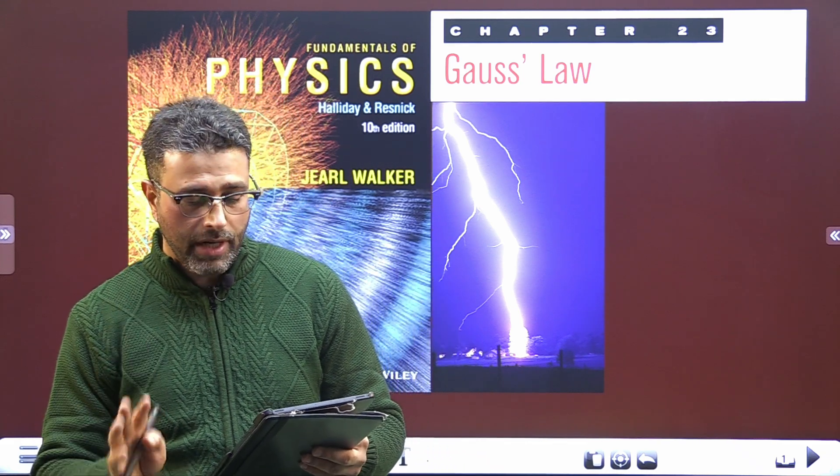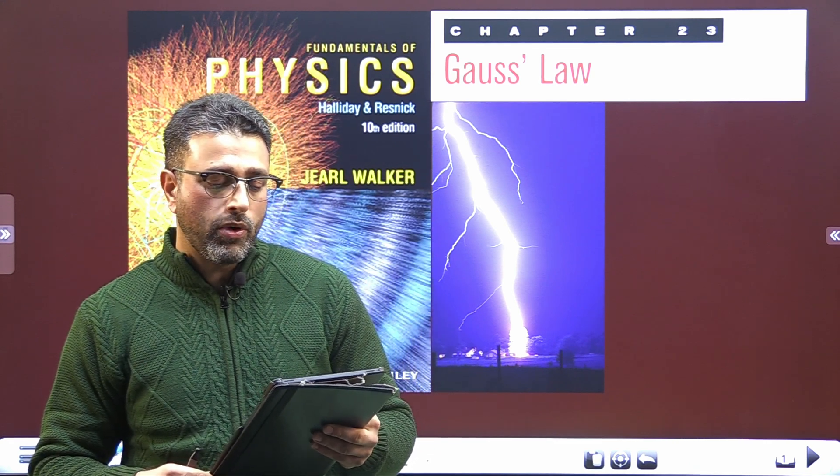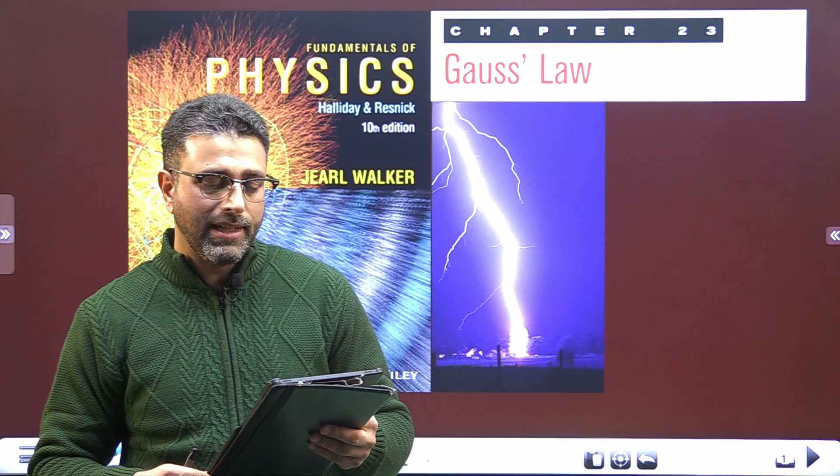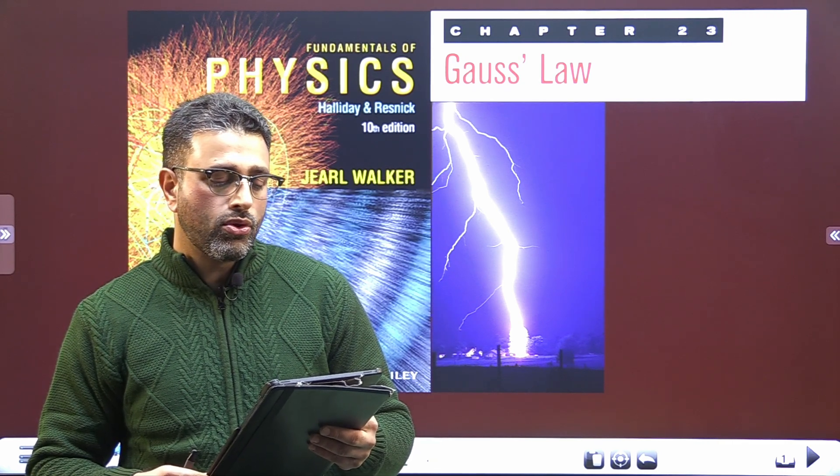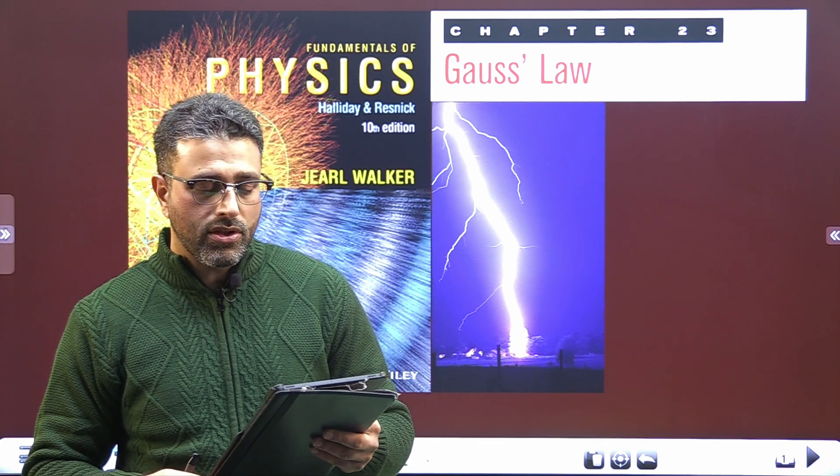An electron is shot directly towards the center of a large metallic plate. It is a conducting plate that has a surface charge density of minus 2.0 × 10⁻⁶ coulombs per meter squared. If the initial kinetic energy of the electron is 1.60 × 10⁻¹⁷ joules, and the electron is to stop due to electrostatic repulsion just as it reaches the plate, how far from the plate must the launch point be?